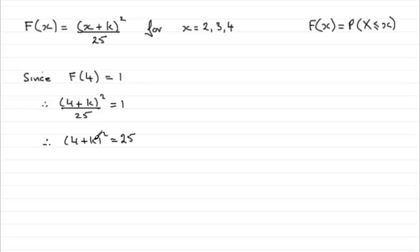Now rather than expand this bracket, what I'd want to do is square root both sides. If I square root both sides, this is where you've got to be careful. The left-hand side is going to be 4 plus k, but over here, square root of 25 could be plus or minus 5.